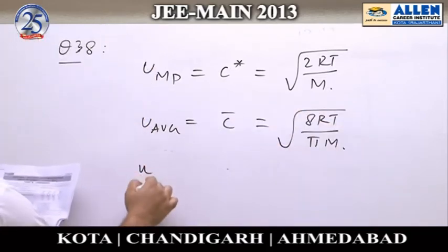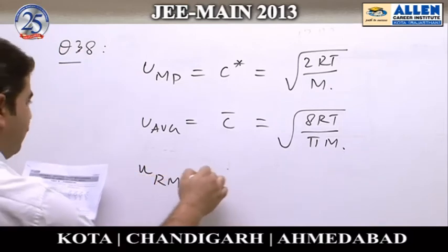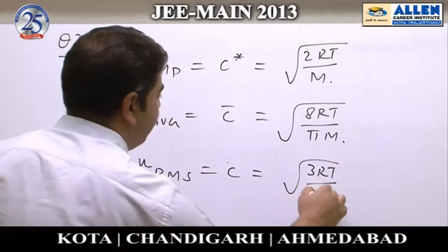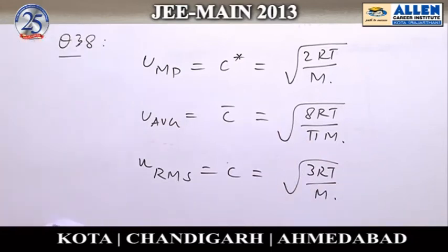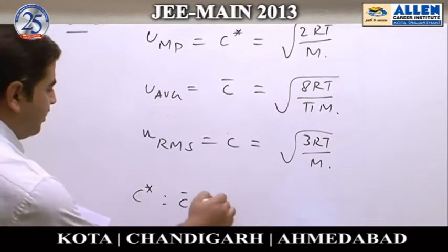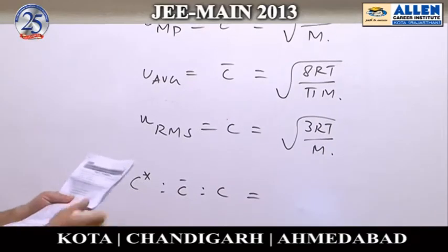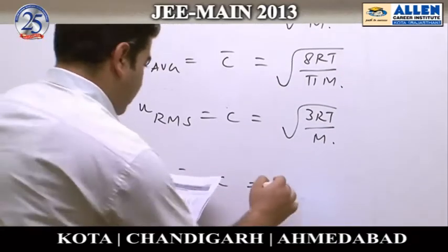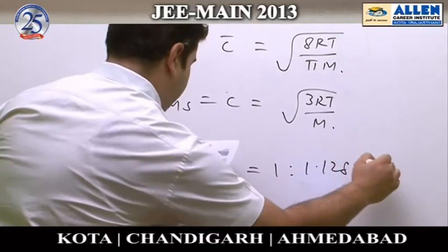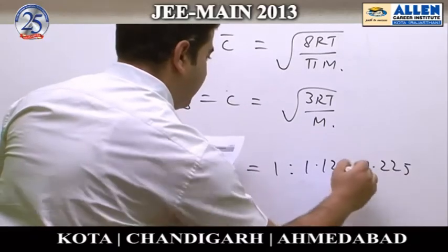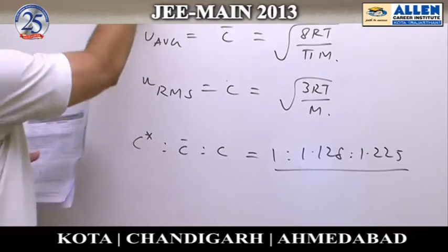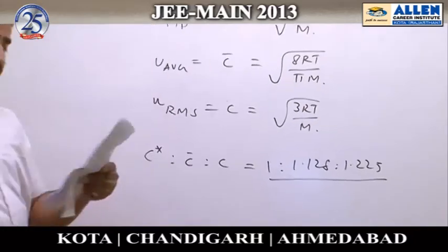The RMS velocity is equal to C, whose value is √(3RT/M). Determining the ratio of these three types of velocities, the ratio comes out to be 1 : 1.128 : 1.225. According to this solution, option 3 must be correct for question number 38.